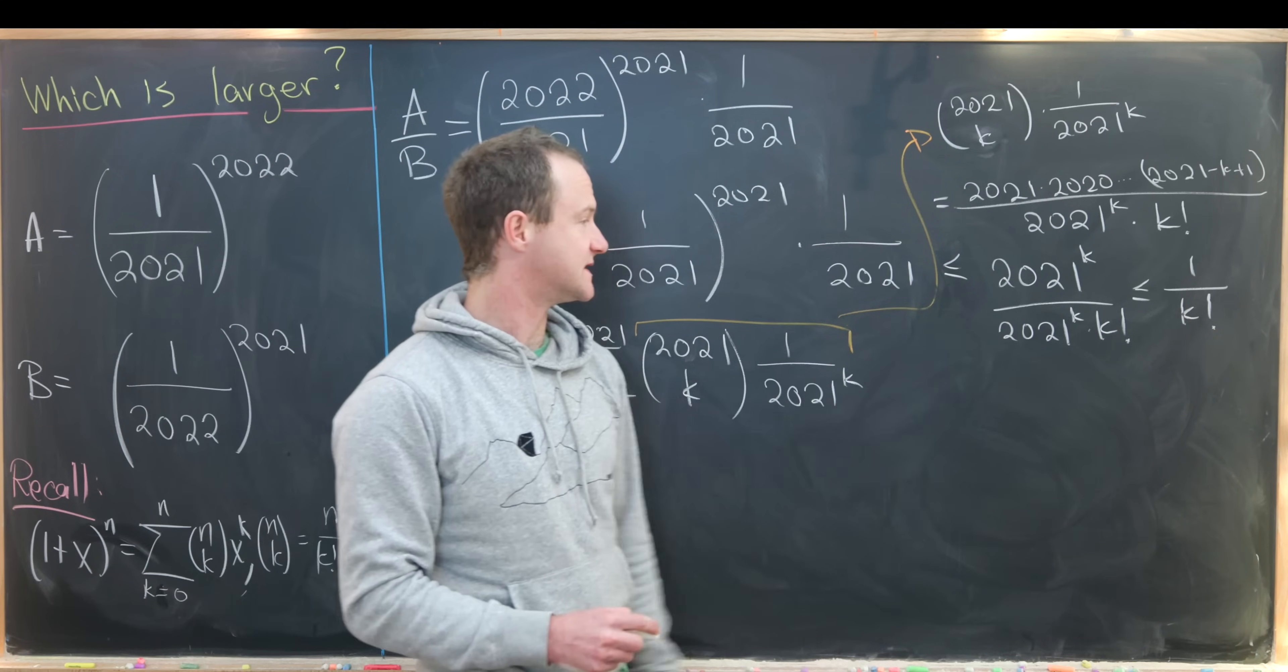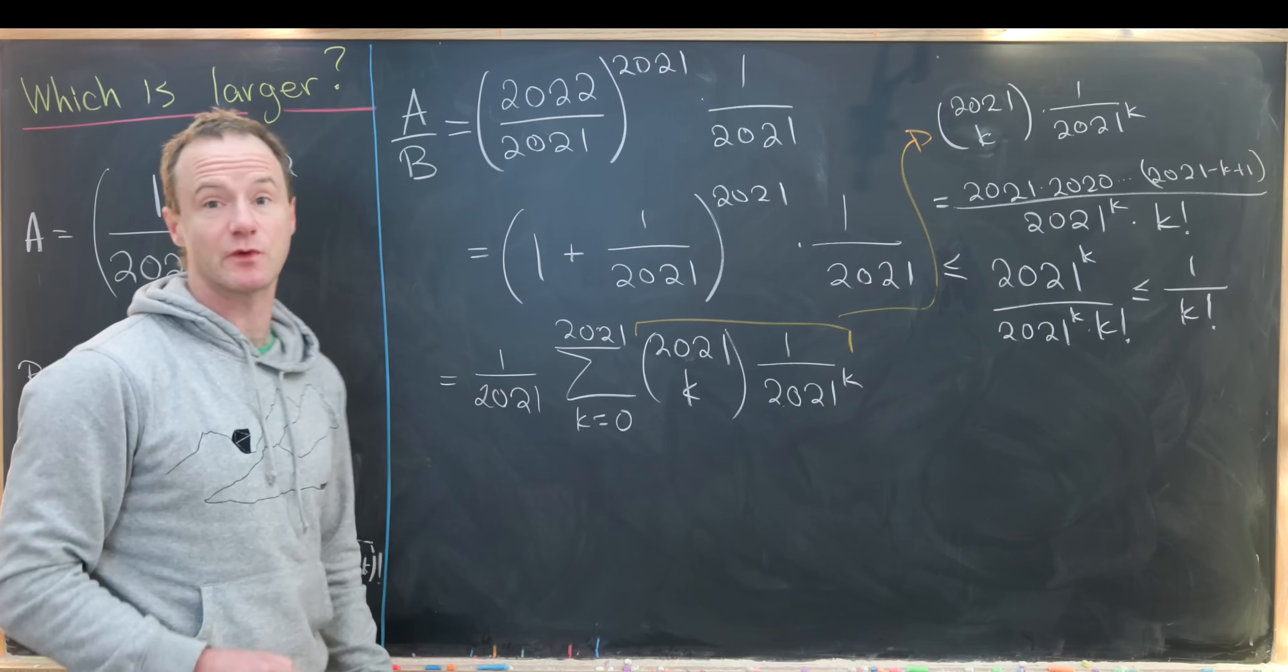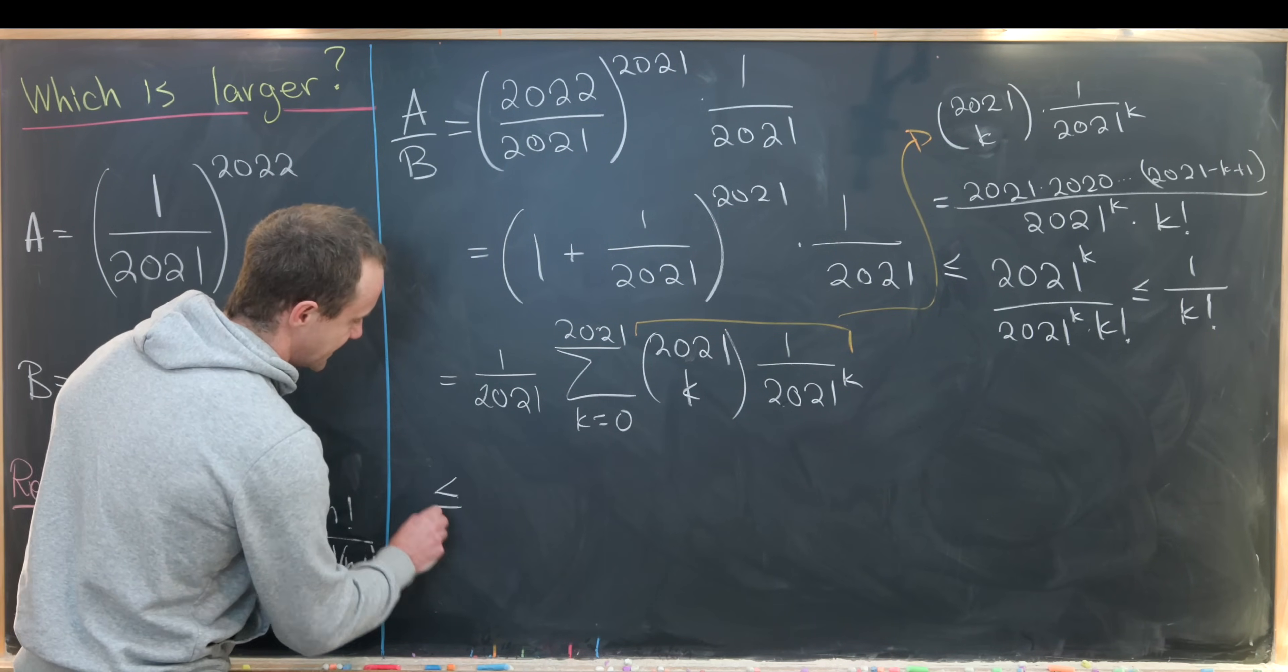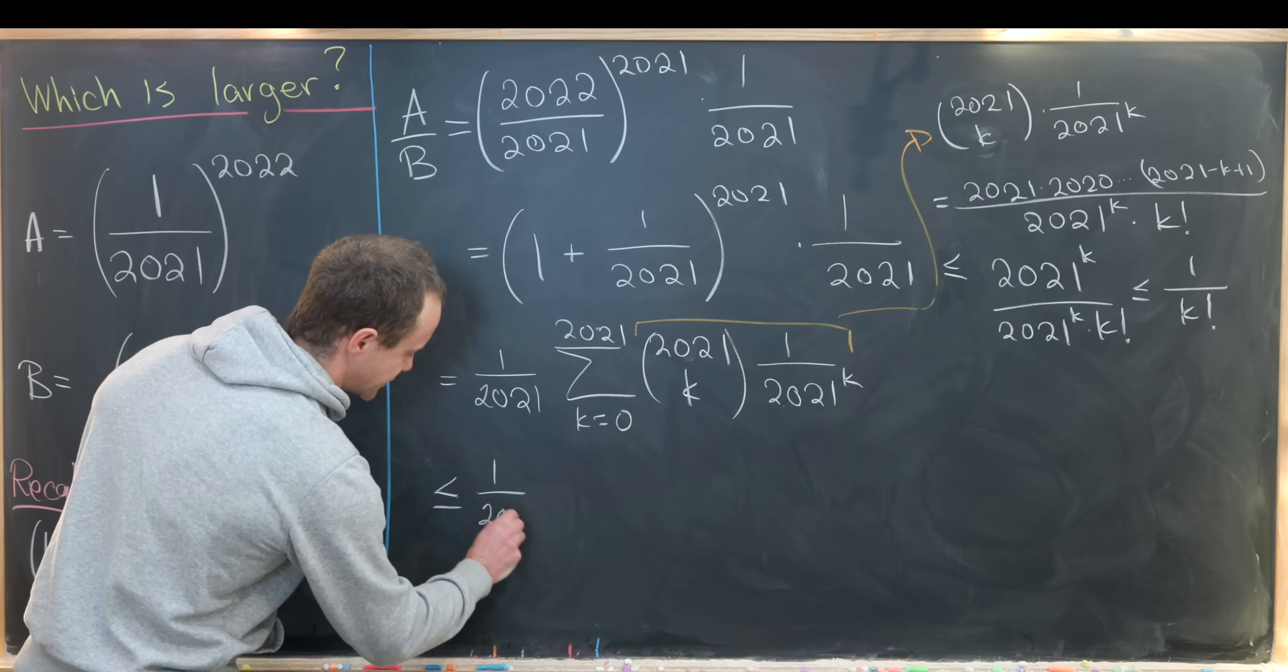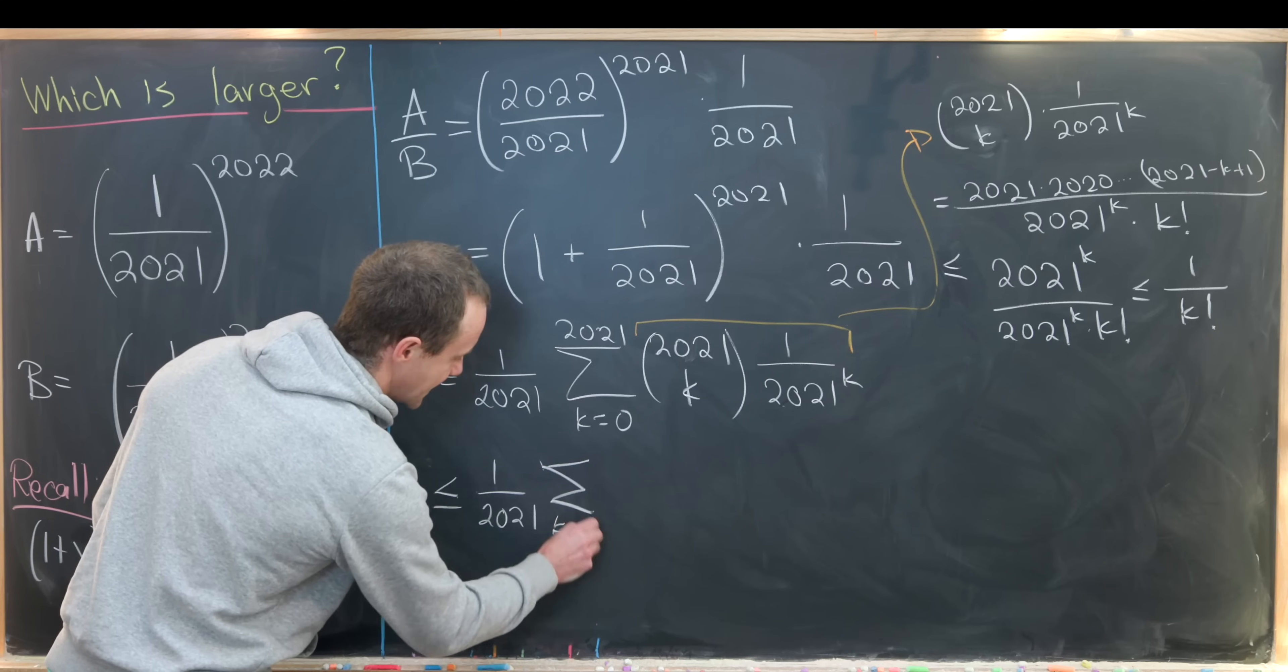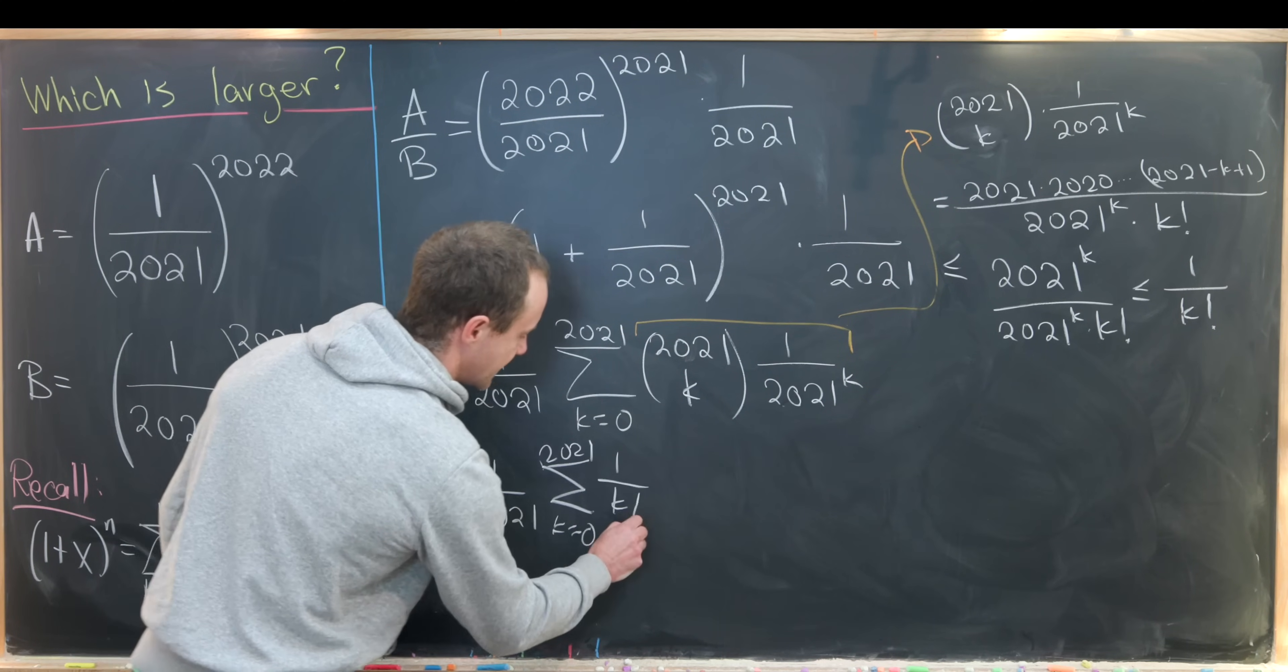Now this is good to see because we can take every term in this sum and replace it with 1 over k factorial. So this is going to be less than or equal to 1 over 2021 times the sum as k goes from 0 up to 2021 of 1 over k factorial.